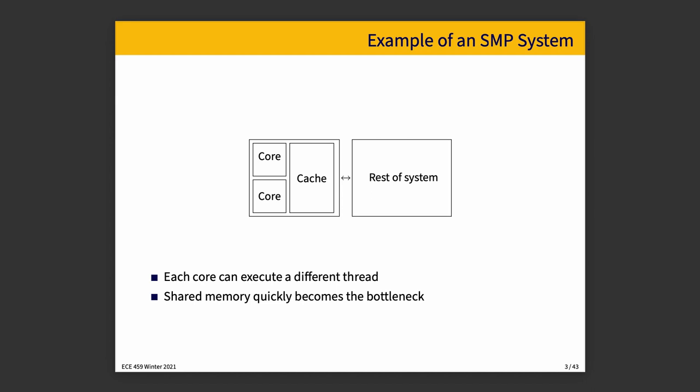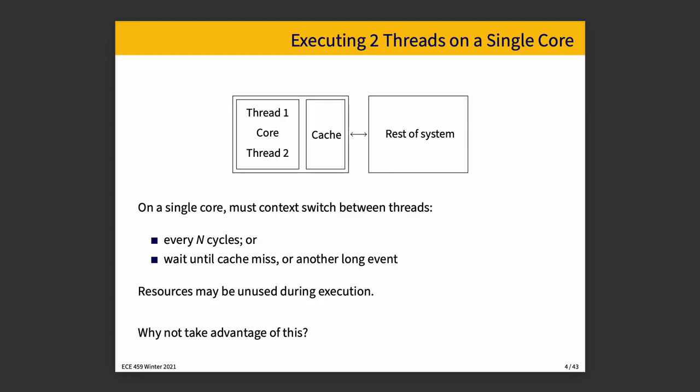Shared memory will quickly become a bottleneck as a result of this, because ultimately there will be a lot of contention over the bus amongst all of the cores. In some hardware configurations, we can have hyper-threading supported.